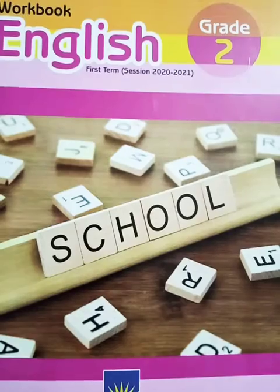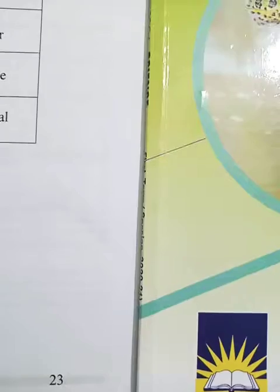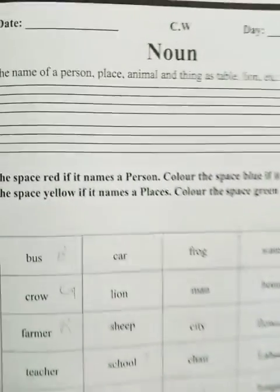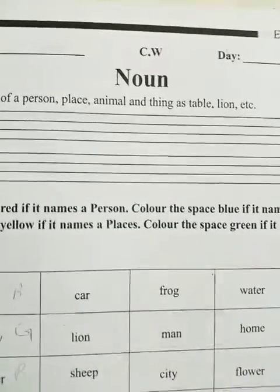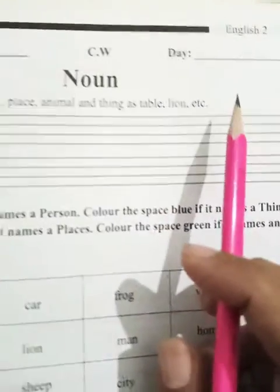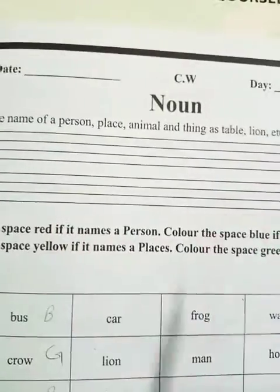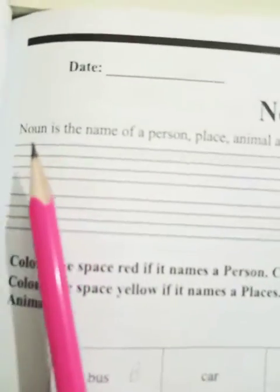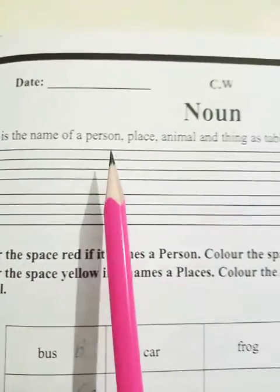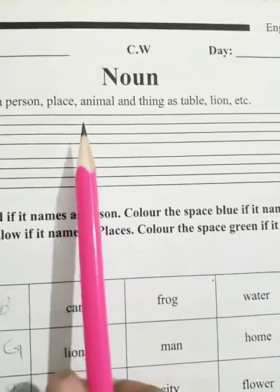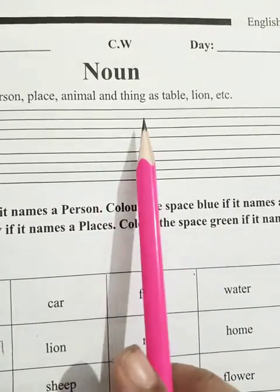Open page number 23. We are on page number 23, and the heading is 'Noun.' Write the date and day over here. You know the definition of noun? Noun is the name of a person, place, animal, and thing.